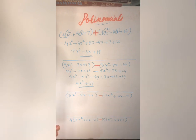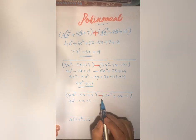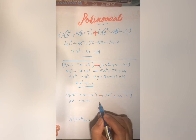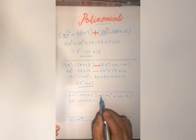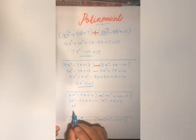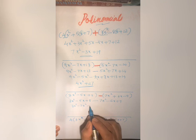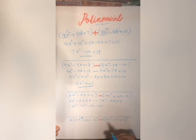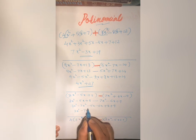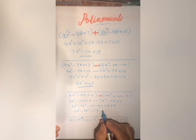This is also a subtraction. First remove the bracket, then multiply all terms with minus. Minus into 7x square gives minus 7x square. Minus into minus 6x gives plus 6x. Minus into minus 9 gives plus 9. 3x cube has no other like term. Combining x terms: minus 5x and minus 6x gives minus 11x. Constants: 8 plus 9 is 17. Result: 3x cube minus 7x square minus 11x plus 17.